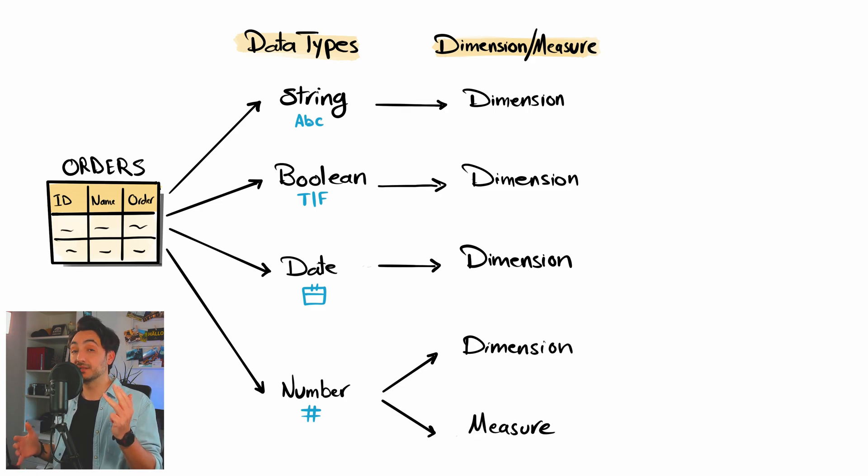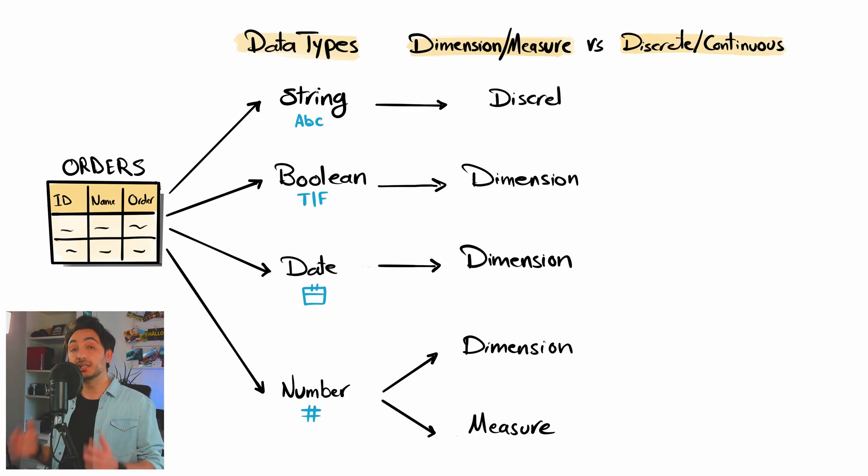Next, Tableau can assign this field to the third metadata concept, discrete or continuous. If we have a dimension field with the data type string, it could be only discrete. We cannot convert it to continuous. Like in our dataset we have the category, the first name, the country. All those fields are string, dimension, and discrete.